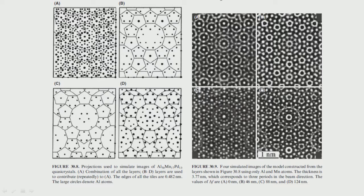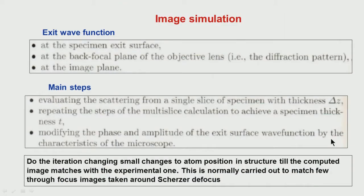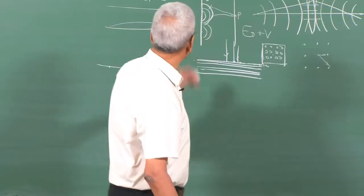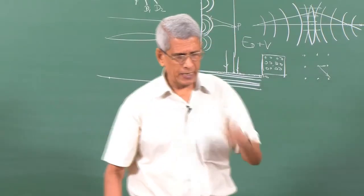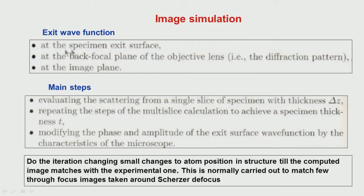Simulated images for different quasicrystal models show the 5-fold symmetry. To summarize image simulation: first, find the exit wave function at the back of the sample as the perfect plane wave passes through it; then consider the back focal plane of the objective lens (the diffraction pattern); finally, account for the distortions that modify the exit wave at the image plane.